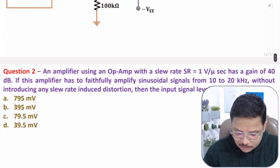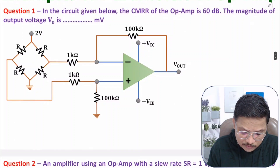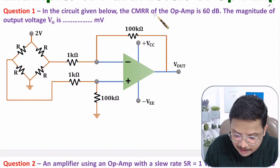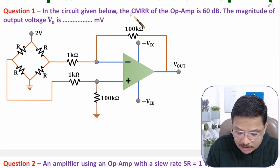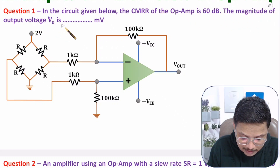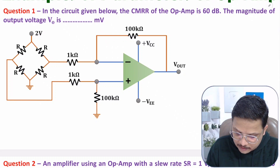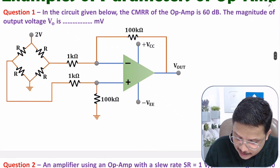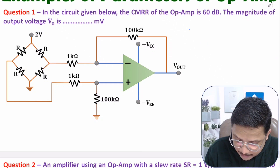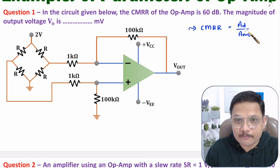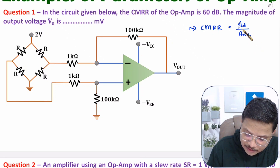Now I'm going to solve the first question. In the circuit given, CMRR — that is Common Mode Rejection Ratio — is given as 60 dB. The magnitude of output V-naught is what we need to find. First, you should know what CMRR is: CMRR is the ratio of differential gain divided by common mode gain.